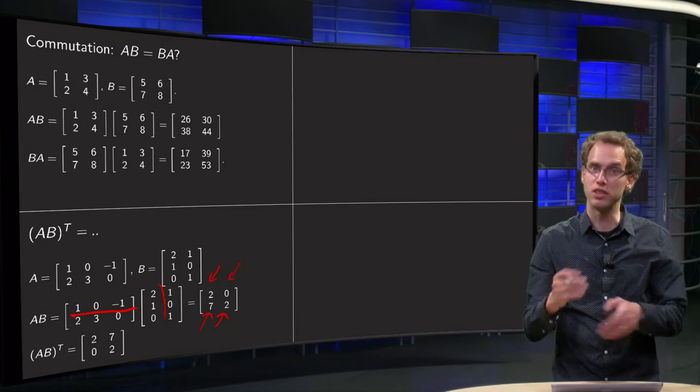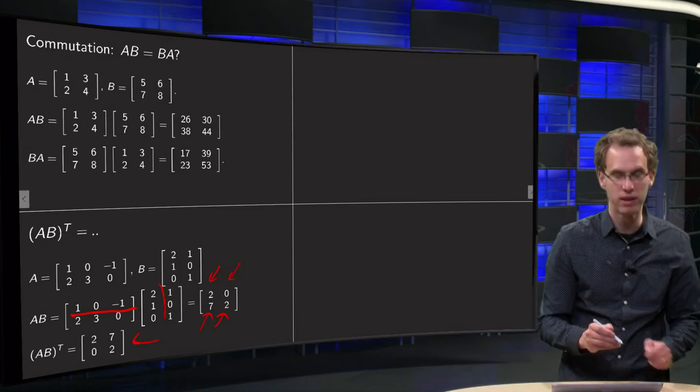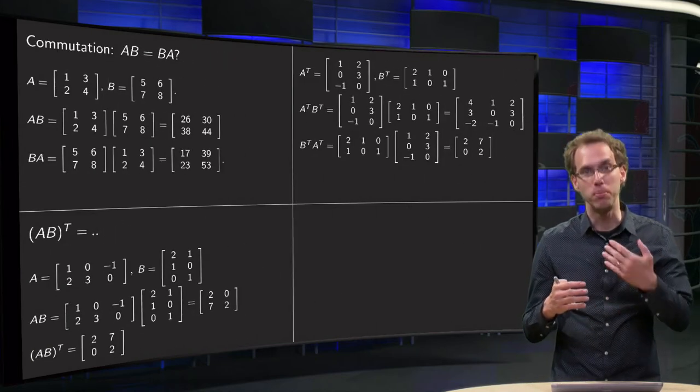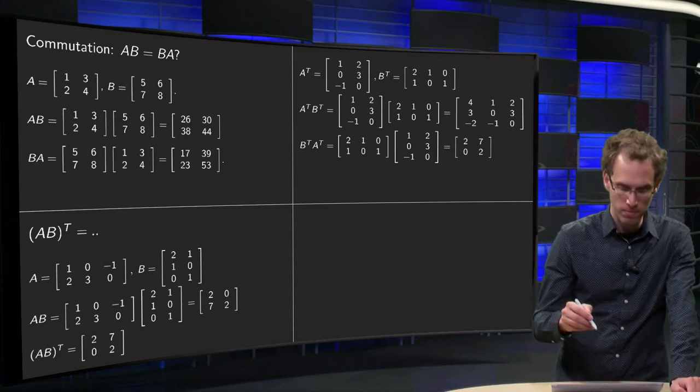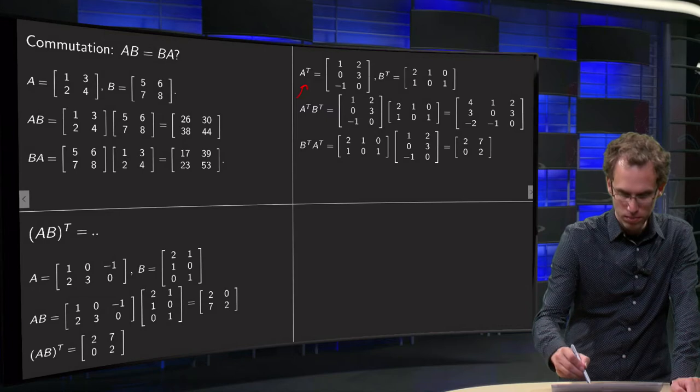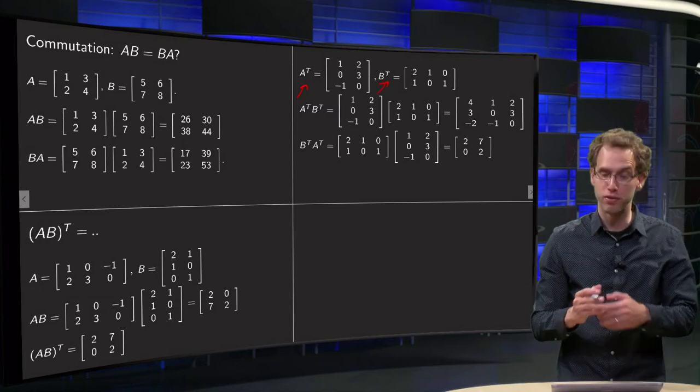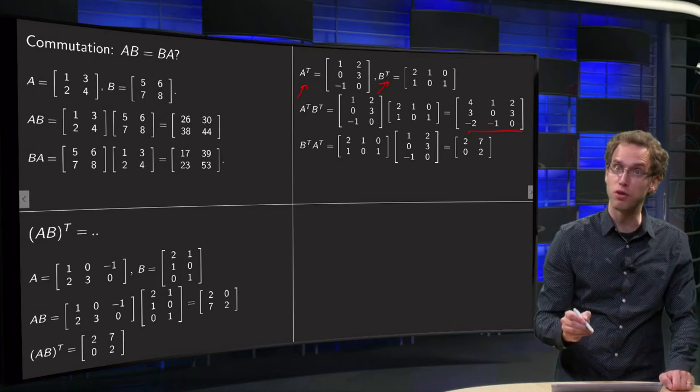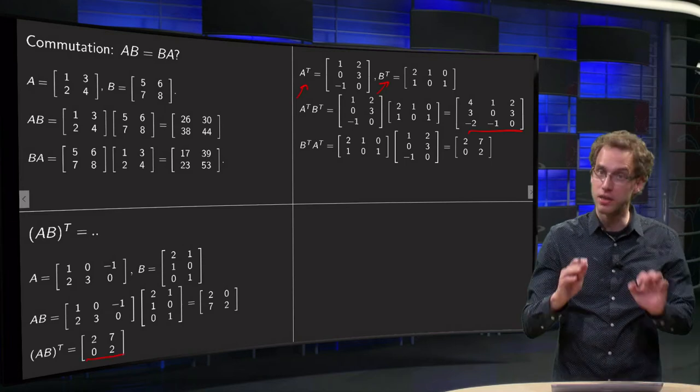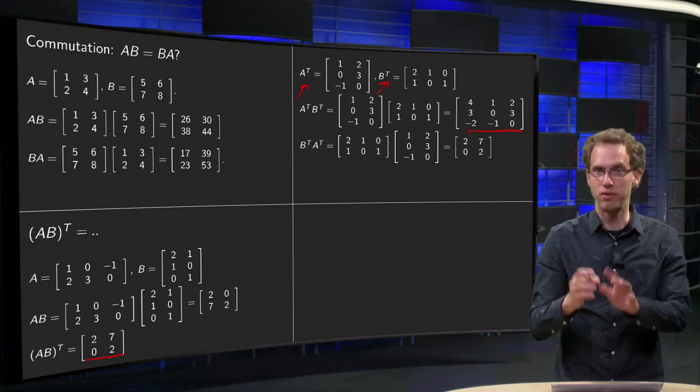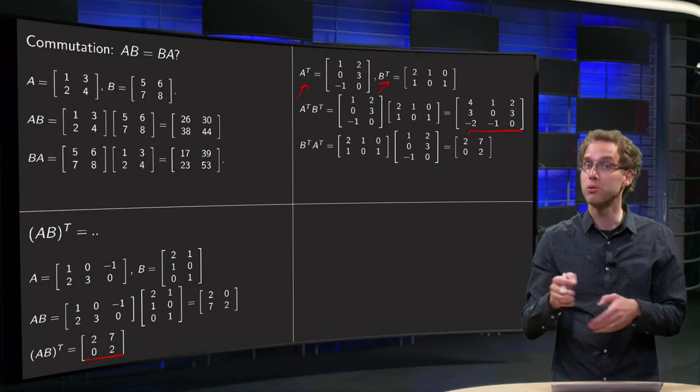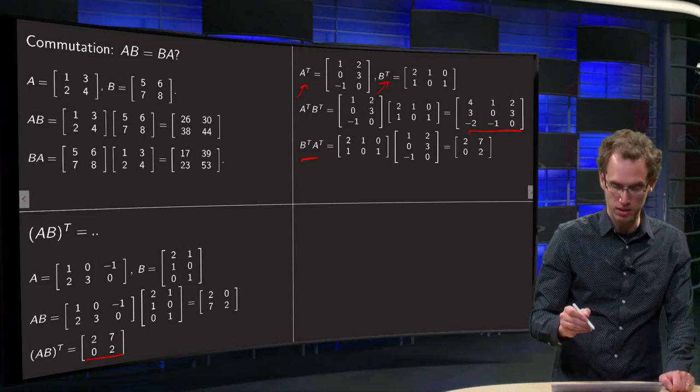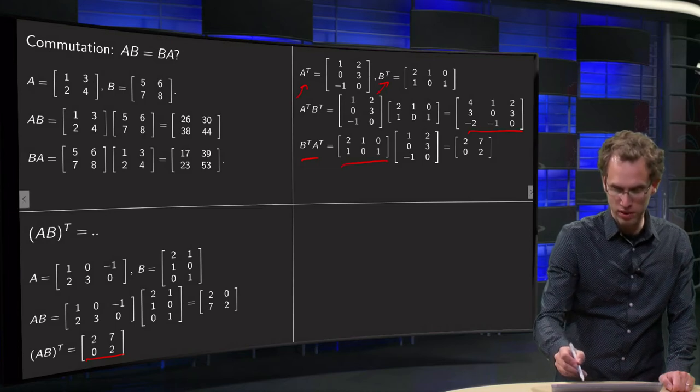And taking the transpose is easy: interchanging rows and columns. So here we have A times B and then the transpose. Now we can of course try to compute A transpose and B transpose and compute A transpose times B transpose. Then even the sizes are not the same because A transpose times B transpose will be 3 by 3, whereas A times B transpose will be 2 by 2. We could try to see what happens if we take them all the way around, so B transpose times A transpose.